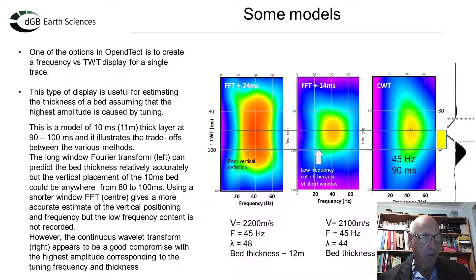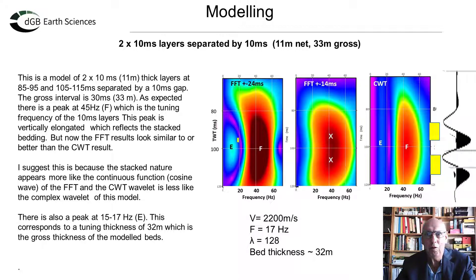This is the most common use of spectral decomposition — where a single sand or bed is present in a background geology. But what happens when geology is stacked beds? We can extend the model to include two sands, say 10 ms thick and separated by 10 ms, giving a gross thickness of 30 ms or 33 m. As expected, there is a peak in amplitude at 45 Hz — the tuning frequency of the 10 ms layers — but there is also a peak at 17 Hz, which corresponds to 32 m, or the gross thickness. Here the FFT looks similar to the continuous wavelet transform, or even better, because the seismic response now looks more like a continuous function.